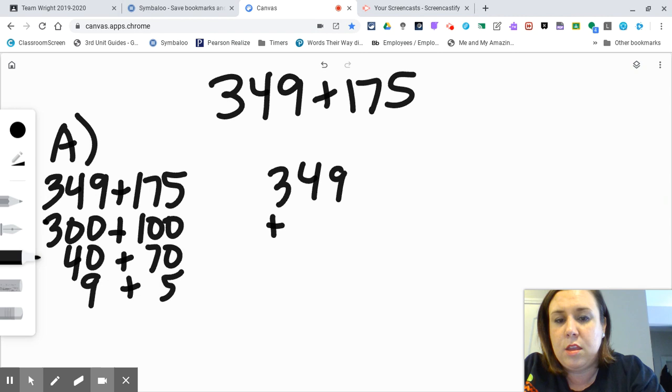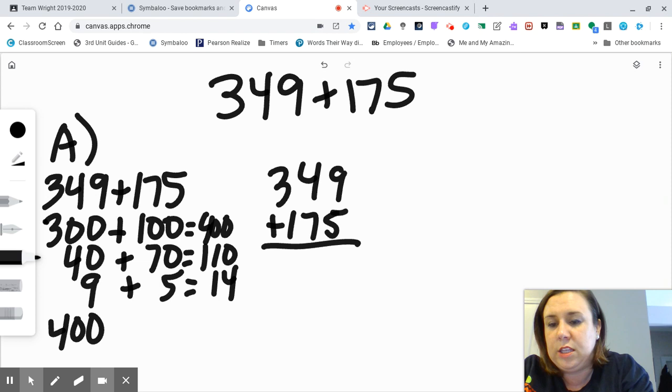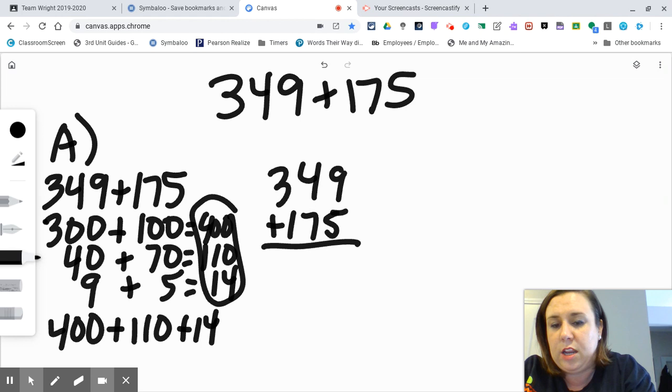I'm just doing it vertically. So 300 plus 100 is 400, 40 plus 70 is 110, 9 plus 5 is 14. Down below, I'm still writing horizontally: 400, and I'm putting all of my sums together, all this in one equation: 400 plus 110 plus 14. I total 500, 10 and 10 is 20, and then I only have 4 left: 524.